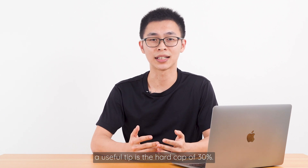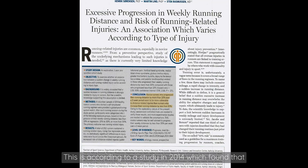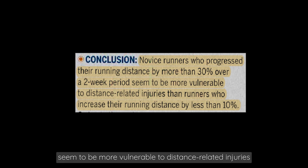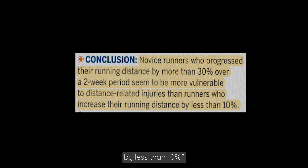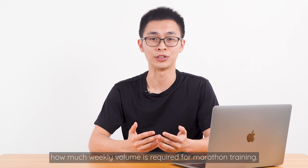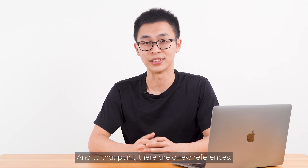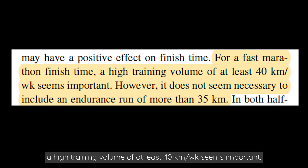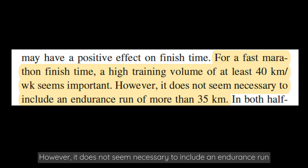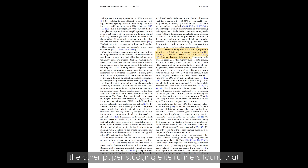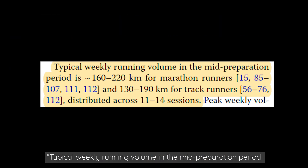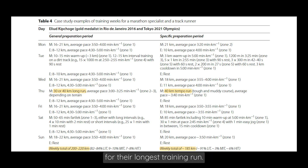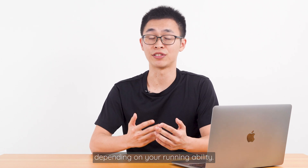Apart from progression rate, take note of how much weekly volume is required for marathon training. A 2020 paper states that for a fast marathon finish time, a higher training volume of at least 40km per week seems important, though it does not seem necessary to include an endurance run of more than 35km. By contrast, elite runners typically run 160–220km per week in the mid-preparation period and commonly cover more than 35km on their longest training run — showing how much training can differ depending on your running ability.